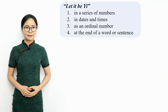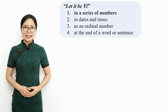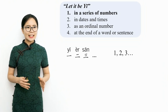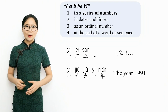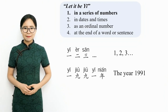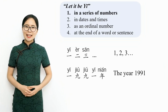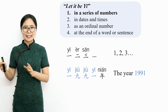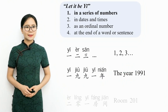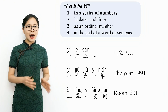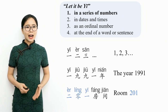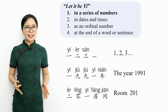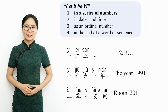The 'let it be Yi' rule applies when Yi is used in a series of numbers. For example, 1, 2, 3 in Chinese is Yi, er, san. The year 1991 is Yi jiu jiu yi nian. In Chinese, when we say the year, we say it digit by digit as a series of numbers. Yi jiu jiu yi means one, nine, nine, one, and nian means year. And room 201 is er ling yi fang jian — er ling yi means 201, and fang jian means room. In each of these examples, the number one, Yi, keeps its default tone, the first tone.